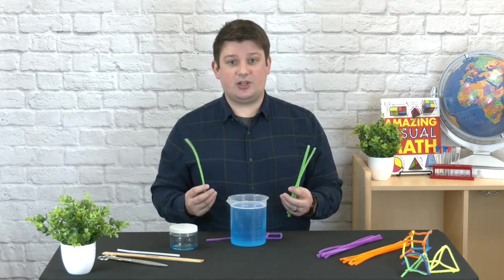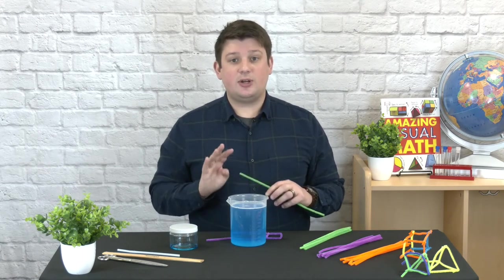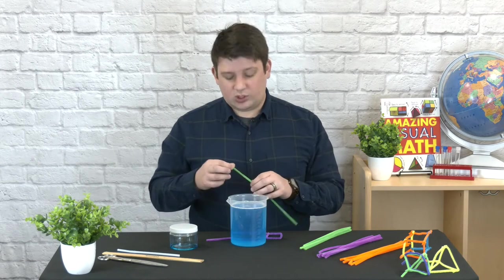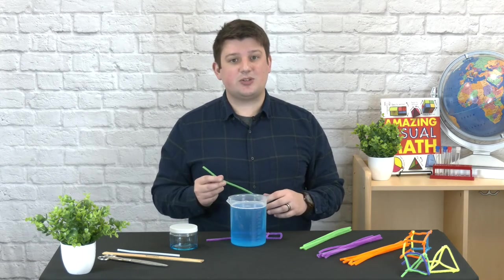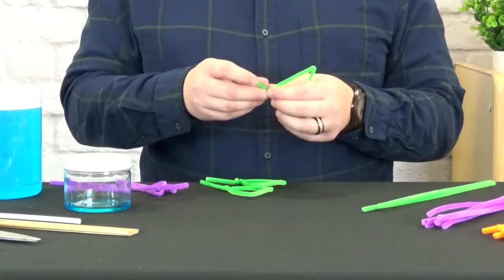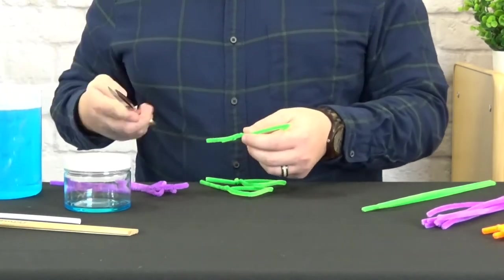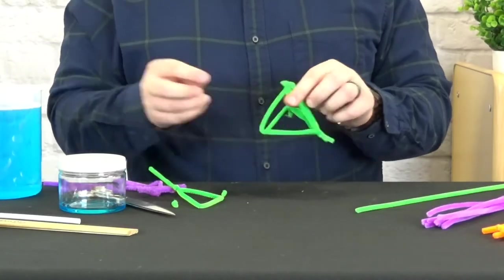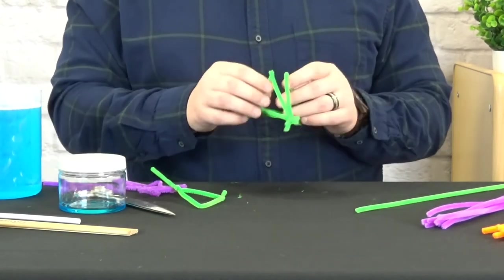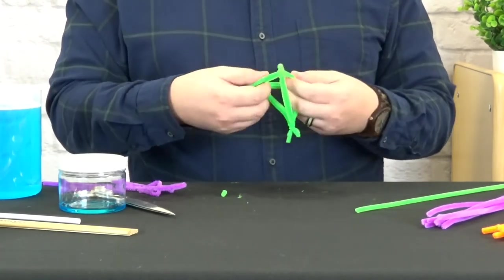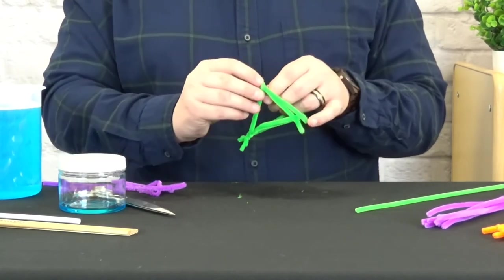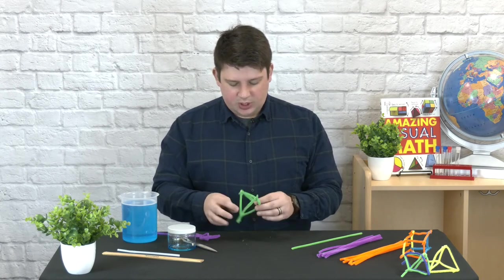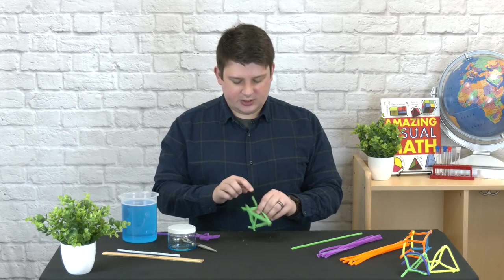Now, for that, we're going to want to take our pipe cleaners, and we're going to want to turn them into four different triangles and then connect them at the corners. When you do this, you'll also want to leave one long part to kind of act as a handle, so you can dip it into our bubble solution. It's okay if your pipe cleaners aren't exactly perfect.